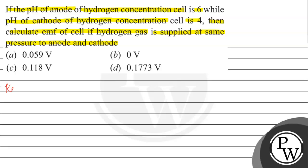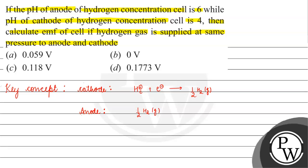The key concept for this question is: at the cathode, we have a reduction reaction, so we have H⁺ being reduced to hydrogen gas. At the anode, we have the oxidation reaction, so hydrogen gas is being oxidized.